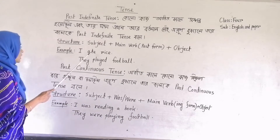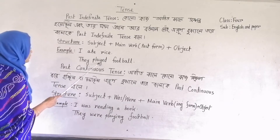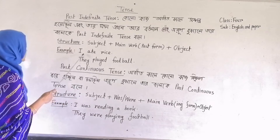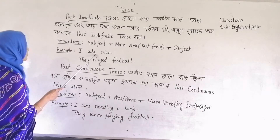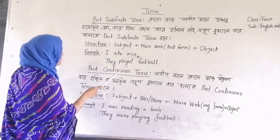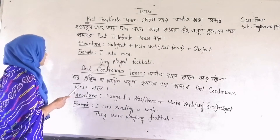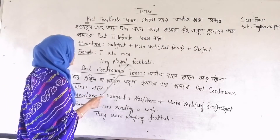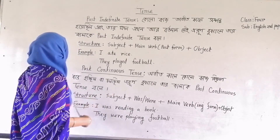Here I have written two examples: 'I ate rice' and 'They played football.' In the first example, 'I' is the subject, 'ate' is the first form of the verb 'eat', and 'rice' is the object. In the second example, 'they' is the subject, 'played' is the main verb in its first form, and 'football' is the object.